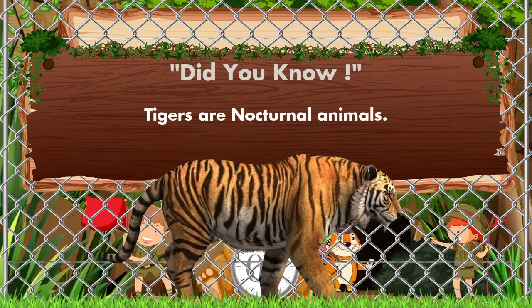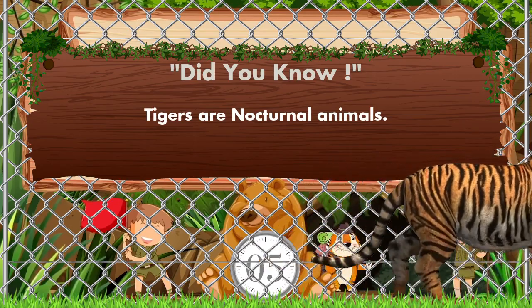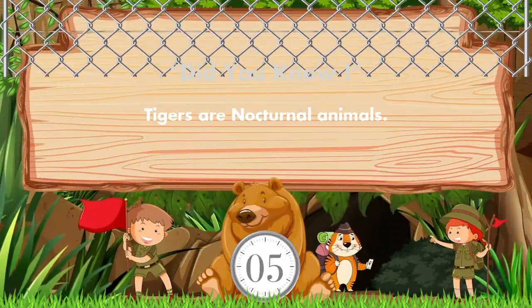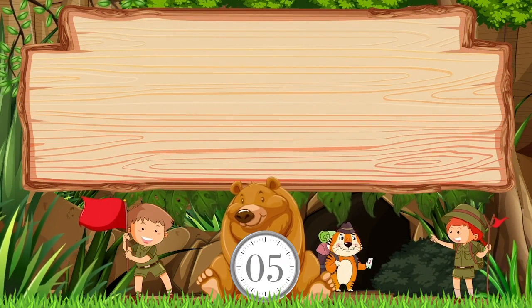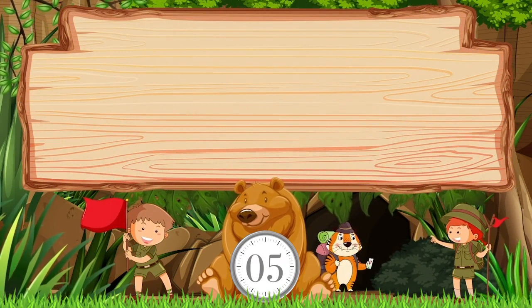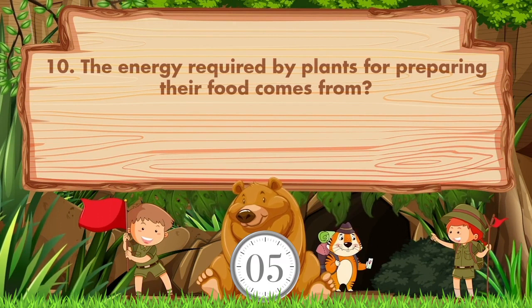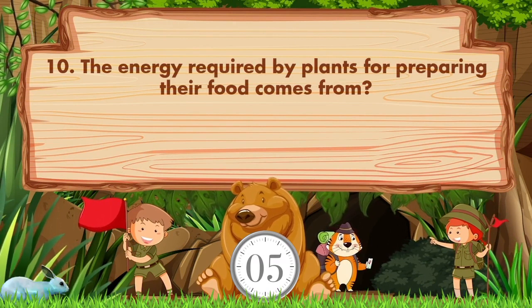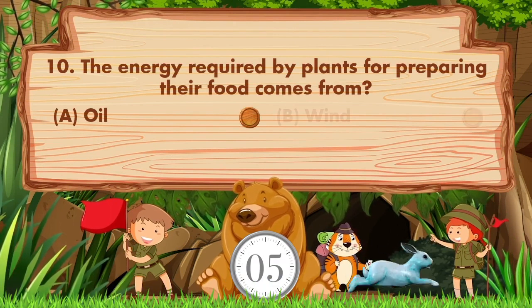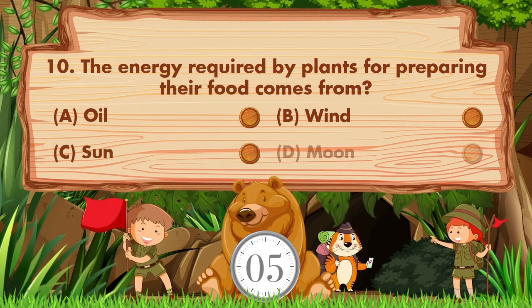Did you know tigers are nocturnal animals? The energy required by plants for preparing their food comes from option A: oil, B: wind, C: sun, D: moon.